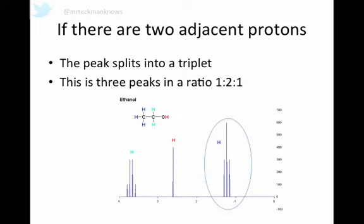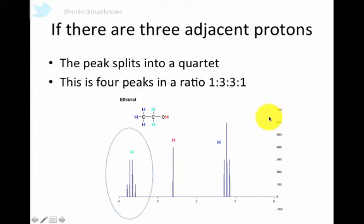If there are two adjacent protons, like in ethanol, these three protons here, the blue protons, they have two adjacent protons. That splits the peak into a triplet, which is three peaks in a ratio of one to two to one. Now, these two protons, the ones that are next to the oxygen, they have three protons adjacent. So their peak is split into four, one to three to three to one. That's called a quartet.